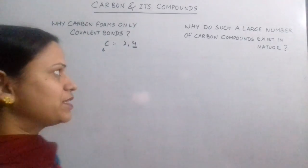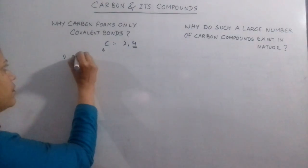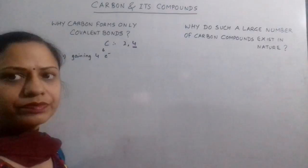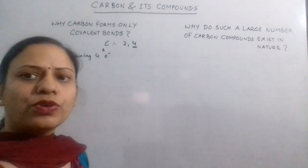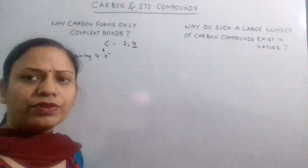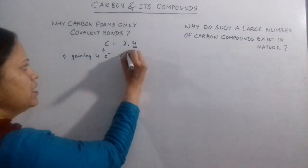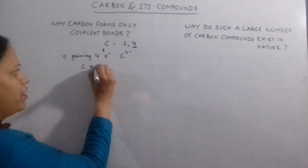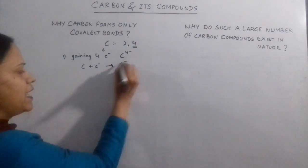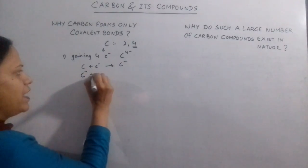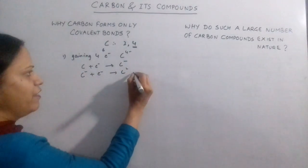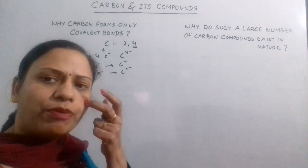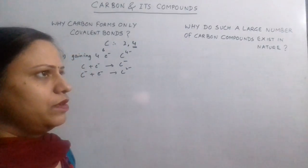Taking the first possibility of gaining 4 electrons. If carbon gains 4 electrons, it will form C4 negative ion. If it gains the first electron it forms C negative. C negative gaining the second electron becomes C2 negative. Finally C3 negative and C4 negative will be formed. Now is this possible?